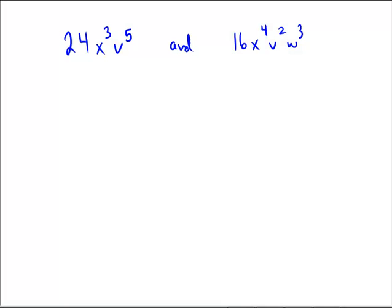Why don't you pause the video for a second and see if you can find the least common multiple of these two monomials: 24X cubed V to the 5th, and 16X to the 4th V squared W cubed. Assuming you paused and tried it on your own, let me work it out.